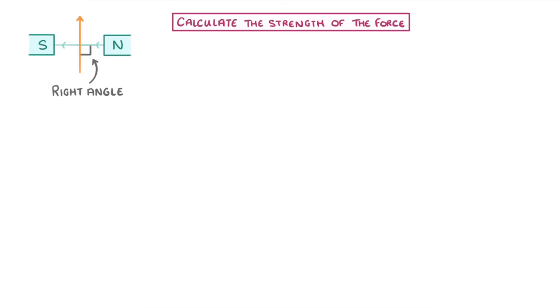The last thing we need to look at is how to calculate the strength of the force. As long as the wire is at a right angle to the magnetic field, then we can use the equation F equals BIL, which stands for force measured in newtons, is equal to the magnetic flux density, which is just a fancy term for magnetic field strength and is measured in teslas, times current, times the length of the wire in meters. You are given this equation in the exam though, so don't worry about remembering it.